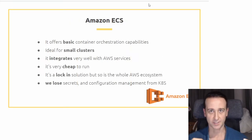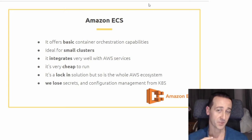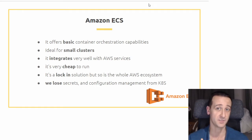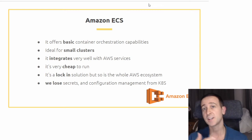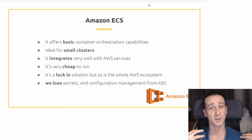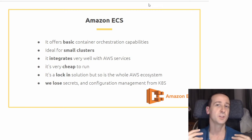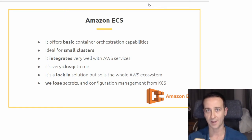Amazon ECS, on the other hand, offers basic container orchestration capabilities and is very well suited to small clusters where you don't have hundreds of servers. It integrates really well with all AWS services — specifically CloudWatch, the VPC, and CI/CD tools like CodeDeploy and CodePipeline. It is really cheap to run, and that includes spot instances whose requests can be managed by the ECS cluster, reducing the cost of running servers on Amazon by up to 90 percent.